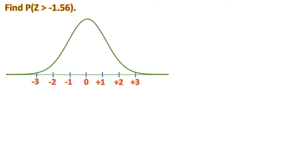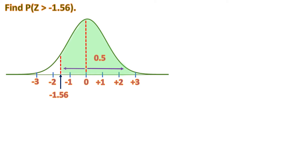Next, find the probability of z greater than negative 1.56. We plot negative 1.56 on the normal curve and mark a line. Since it's greater than, we shade to the right. We divide the shaded region with a line at 0, since that's where our z-table starts. The right half from 0 onward is 0.5, and we only need to find the area between negative 1.56 and 0, then add 0.5.